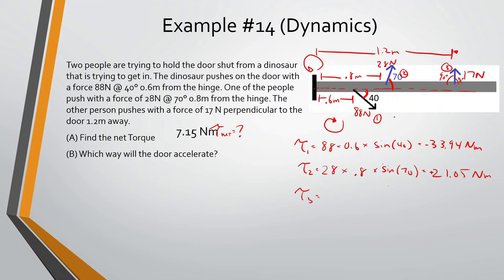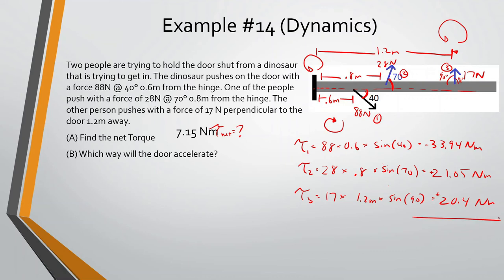Torque 3 equals 17 times 1.2 times sine of 90, giving 20.4 newton-meters. This force also acts counterclockwise, so it's positive. The net torque is: negative 33.94 plus 21.05 plus 20.4, which equals 7.51 newton-meters. Which way will it accelerate? Clockwise — toward the dinosaur.